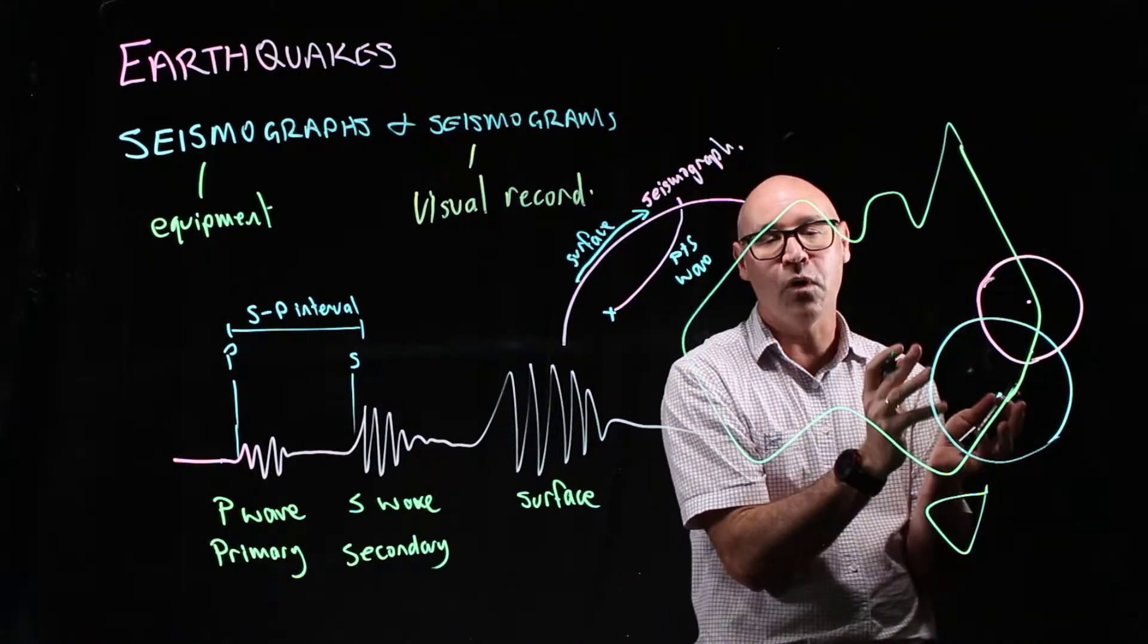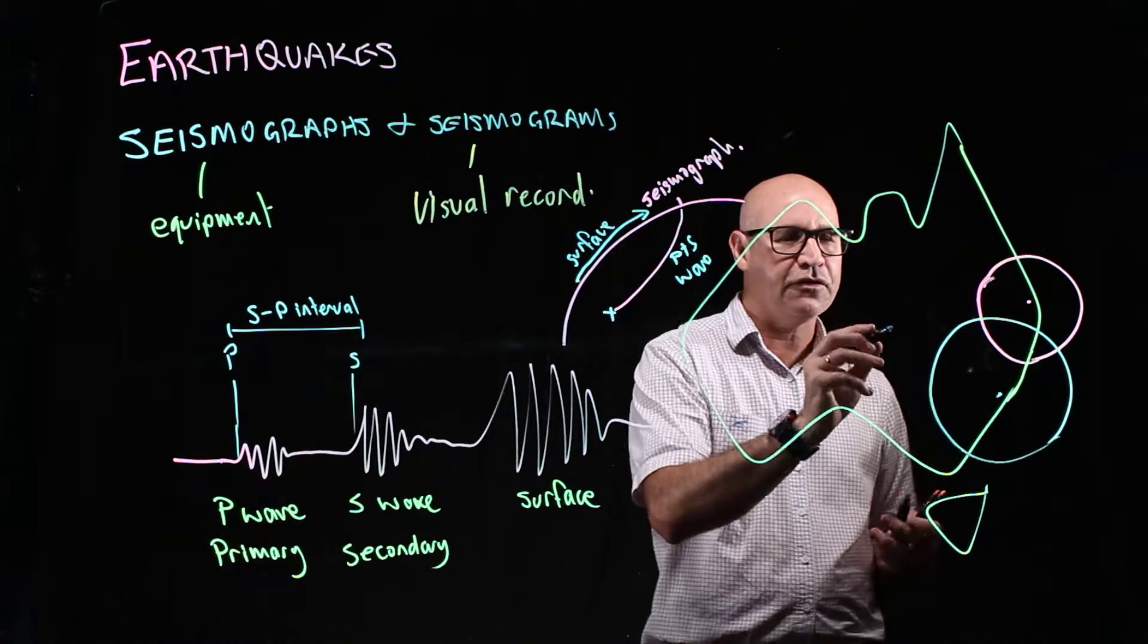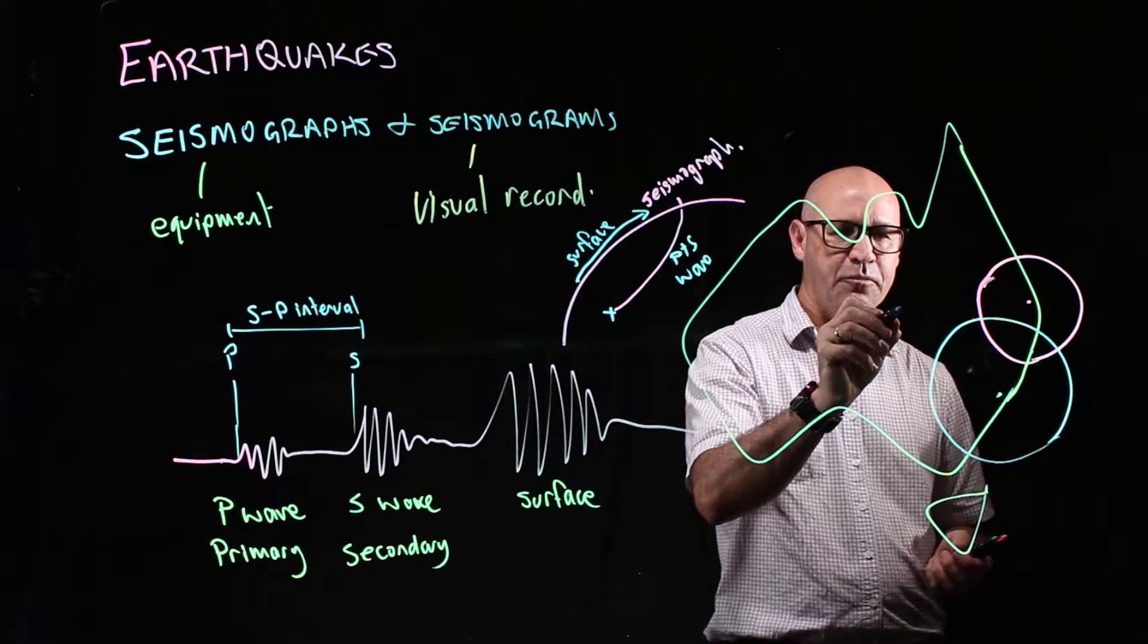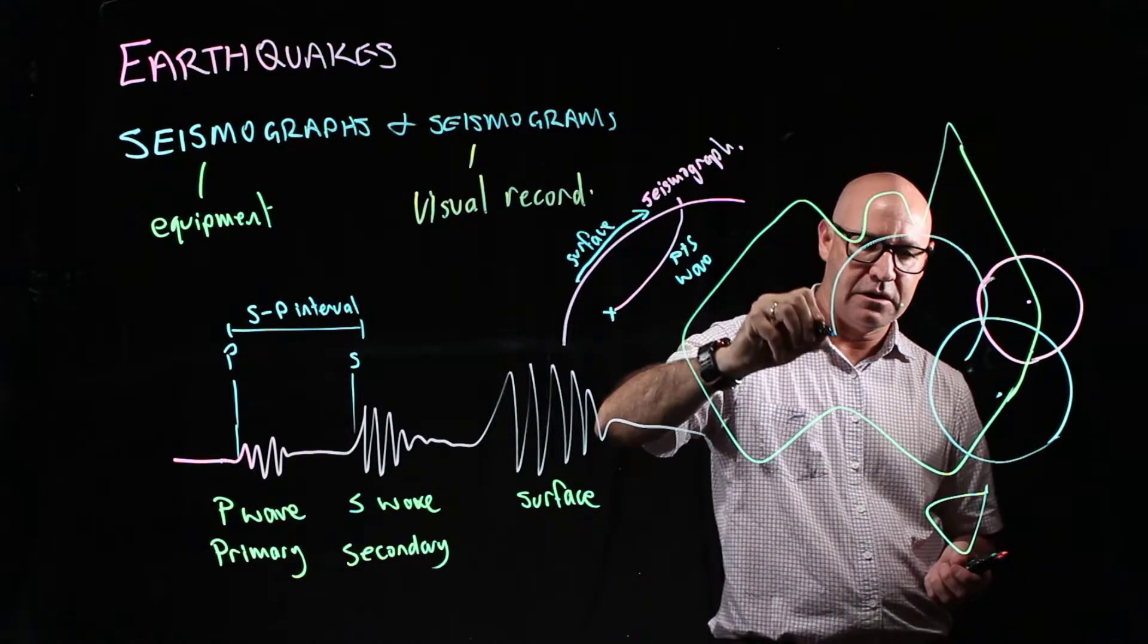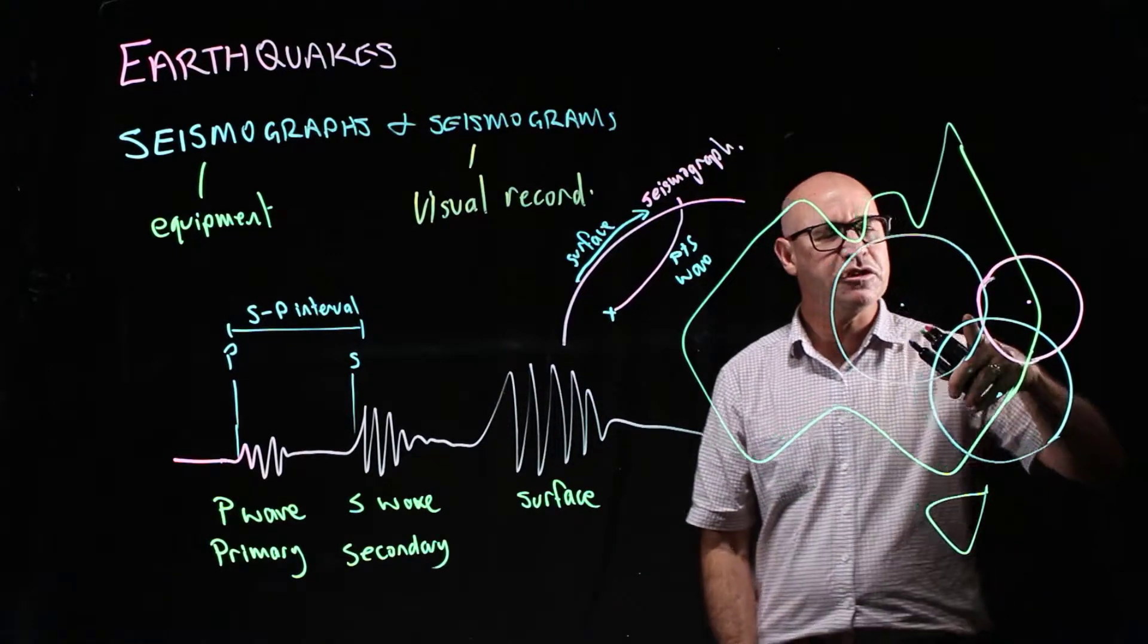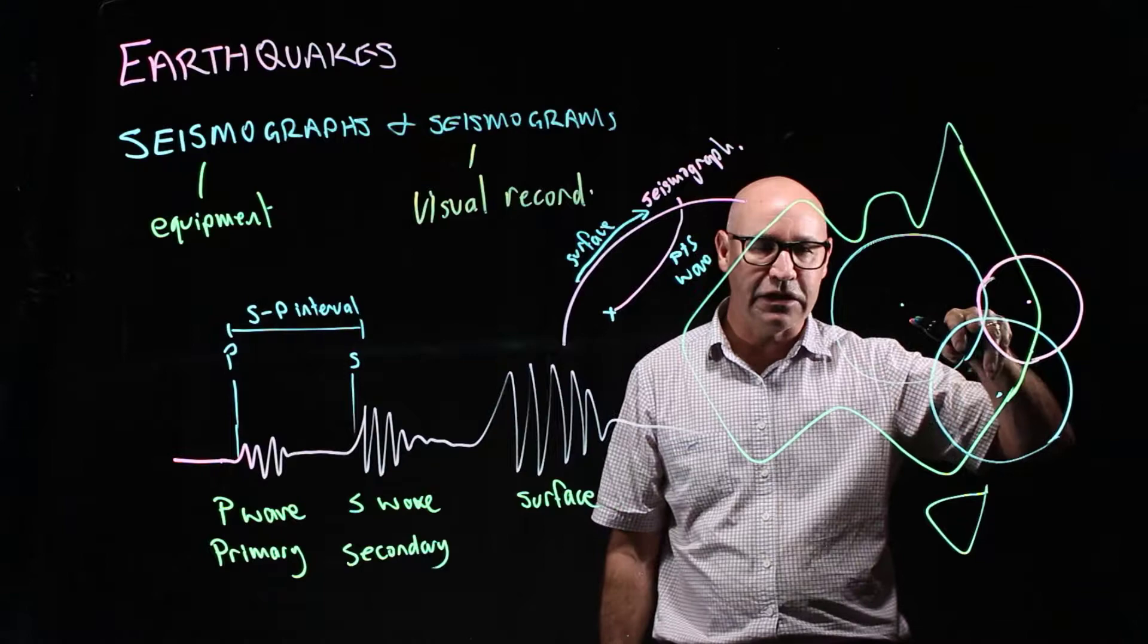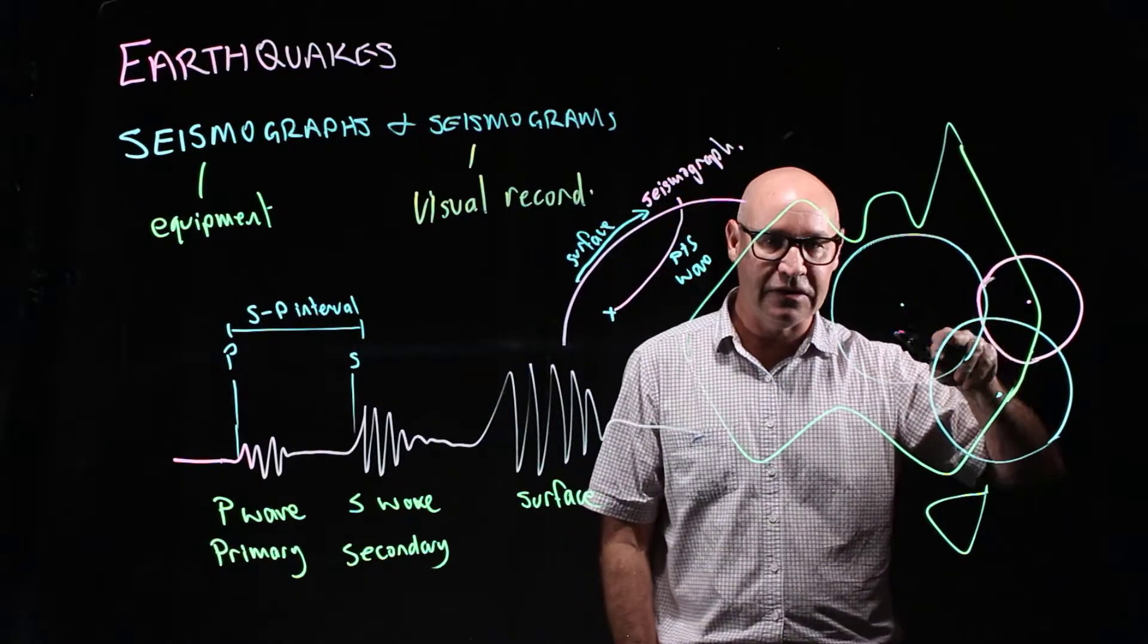So to be able to triangulate, we need to have one more piece of data. So let's say the seismic station was in Alice Springs. And it identified it could be anywhere around that circle. You can see that there's actually a point here where we've got triangulation. So the scientists are able to say, well, that's where the epicenter is.